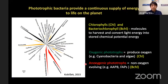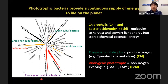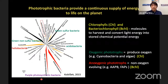Anoxygenic phototrophs are divided into six major phyla: Proteobacteria (purple photosynthetic bacteria), Chlorobi (green sulfur bacteria), Chloroflexi (green non-sulfur bacteria), Heliobacteria (belonging to Firmicutes), the recently discovered Acidobacteria, and Gemmatimonadetes. These are the six anoxygenic phototrophic organisms discovered so far, representing seven phototrophs across different phyla.